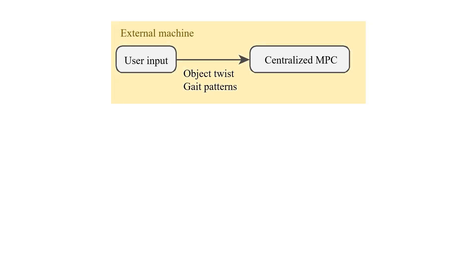We propose a centralized model predictive controller for the coordination of multiple one-armed quadruped robots. The inputs to our MPC comprise linear and angular velocity commands for a target manipulated object, as well as gait patterns for each robot.